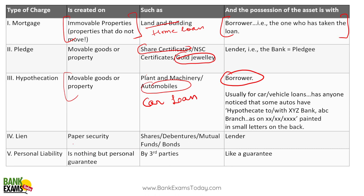Lien is created on paper security such as shares, debentures, mutual funds, and bonds — and the lender has possession. Generally promoters or directors of companies take such loans. Personal liability is nothing but a personal guarantee. For example, a friend of yours took a loan and you give a guarantee — that is personal liability.